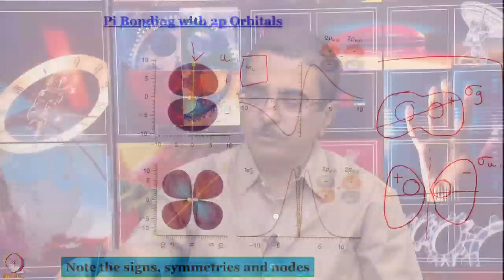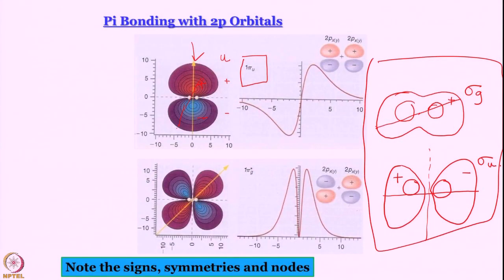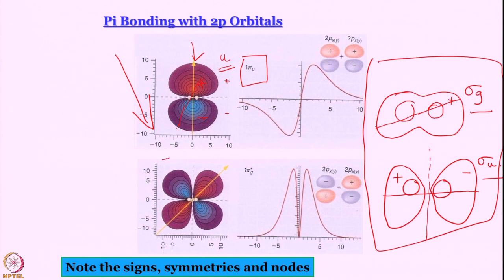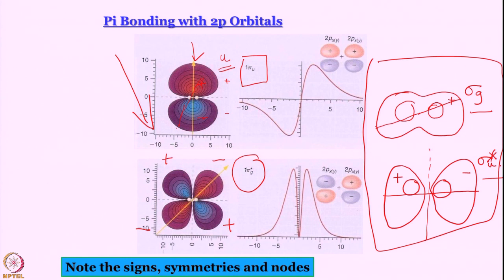For pi bonding with p orbitals, the contour diagram shows a node at the center and a change in sign of the wave function upon inversion — this is called anti-symmetric or ungerade, so these are pi_u orbitals. For the pi anti-bonding orbital, the wave function is symmetric with respect to inversion, making it pi_g. Anti-bonding orbitals are denoted with a star symbol.